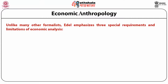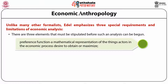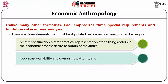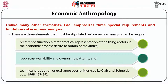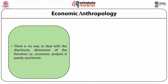Berliner's economic anthropology, unlike many other formalists, emphasizes three special requirements and limitations of economic analysis. There are three elements that must be stipulated before such an analysis can begin: A, a preference function — a mathematical representation of the things actors in the economic process decide to obtain or maximize; B, resource availability and ownership patterns; and C, technical production or exchange possibilities, as referenced in Lee, Claire and Schneider 1968, pages 457 to 59. There is no way to deal with the diachronic dimension — that is, economic analysis is purely synchronic.